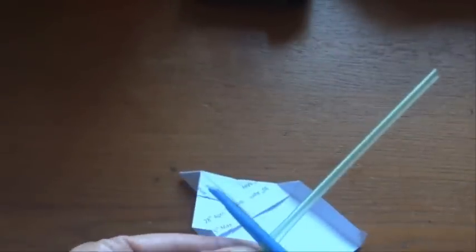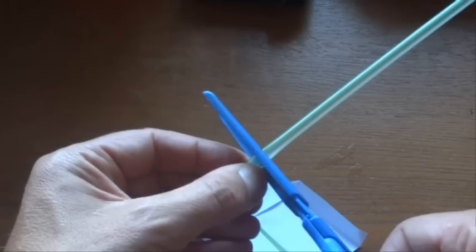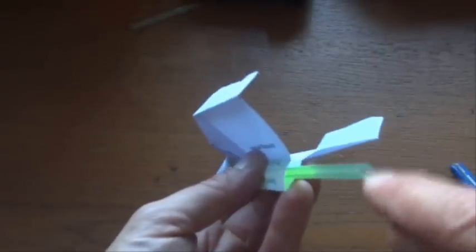And then all we need to do is probably just cut the fatter straw. Cut that like that, cut a bit of the end off, and that slides over like that.